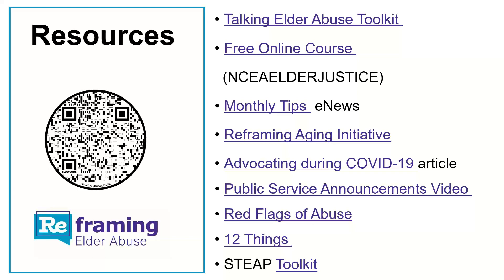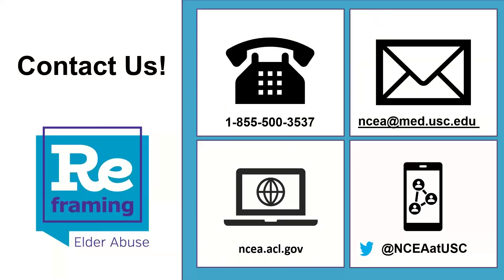We also have our sister project, the Reframing Aging Initiative — a similar project that really focuses on the aging aspect instead of the elder abuse aspect. Our resources available include the PSA, the Red Flags Flyer, 12 Things We Can All Do To Prevent Elder Abuse, and the STEEP Toolkit. If you have any questions, our contact information is on the next slide. I've so appreciated being able to talk with you all today.